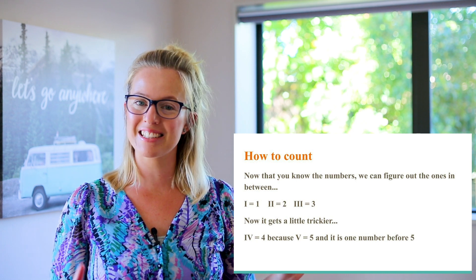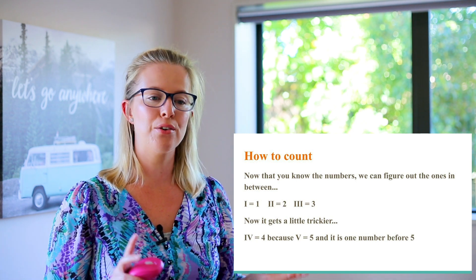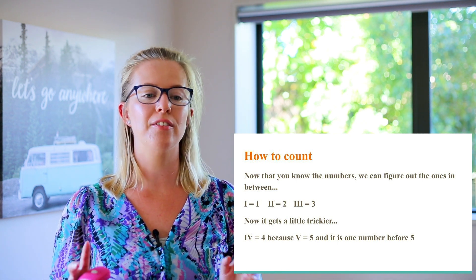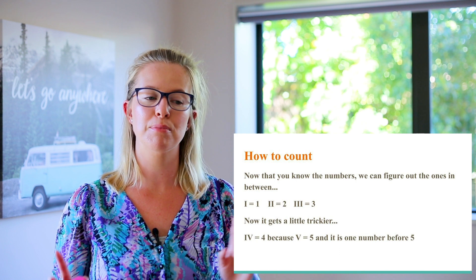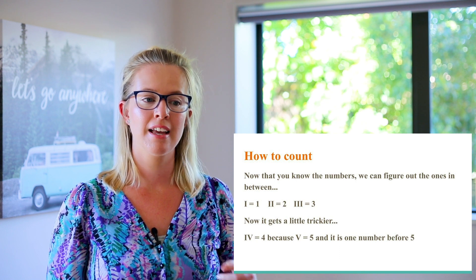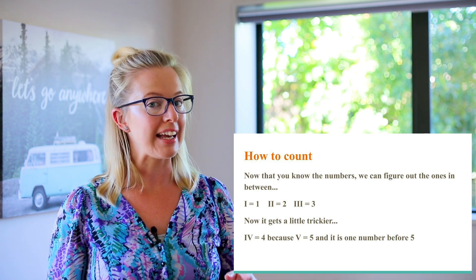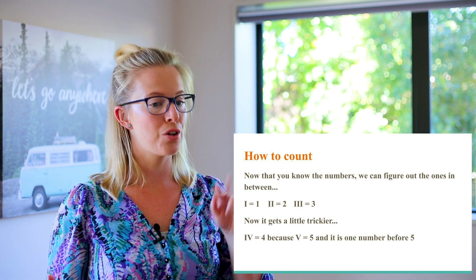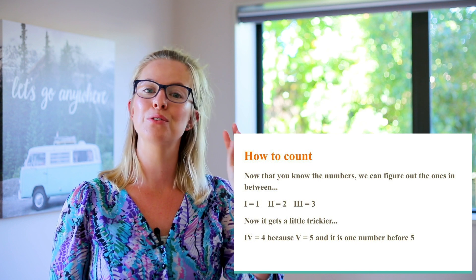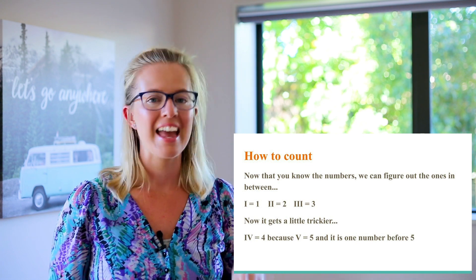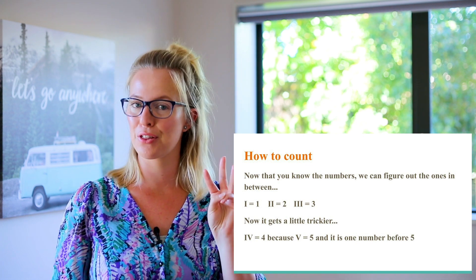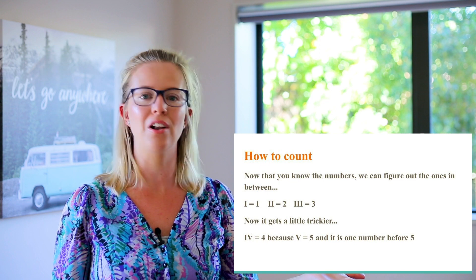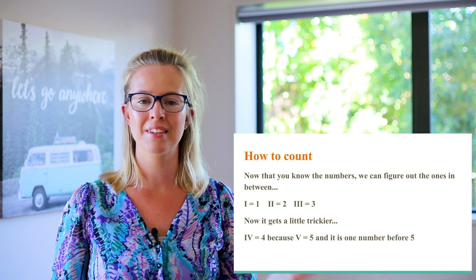How to count. Now that you know the base numbers, we can figure out the ones in between. I equals one, two I's equals two, and three I's equals three. I think we can follow along with that one, but it gets a little bit trickier from now on.